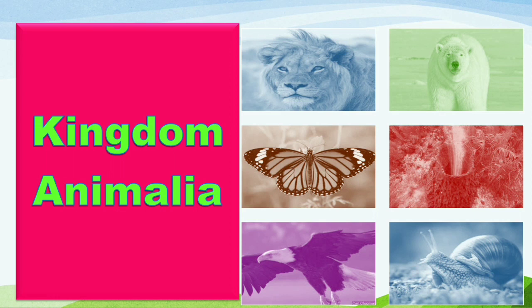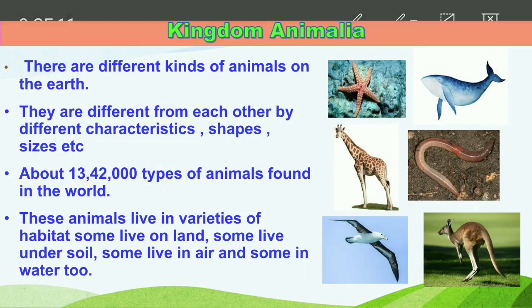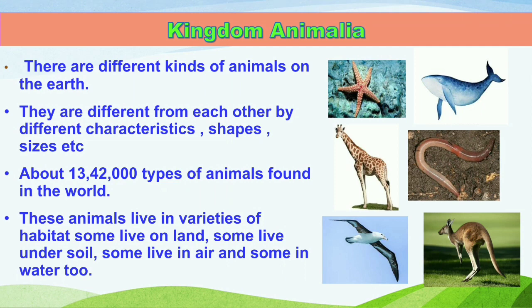When we see around us, we see different types of animals. These animals are different from each other by different characteristics like shape, size, and different structure. In Kingdom Animalia we can see different kinds of animals, and these animals differ from each other by characteristics such as shape, size, etc.